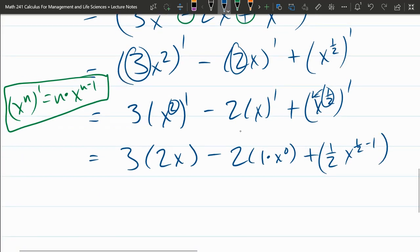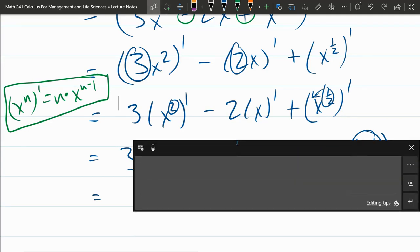6x minus 2 plus 1 half x. What power is this? 1 half minus 1 is negative 1 half. And this is our derivative. And that's all there is to it for our first derivative problem.